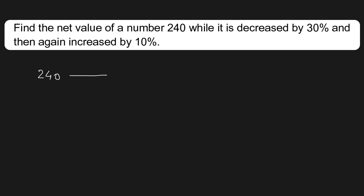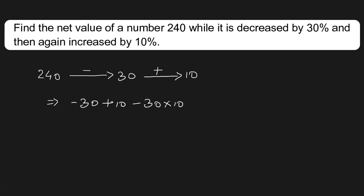Decrease will give us minus 30 percent, and then it is increased by 10 percent, so increase will give us plus 10 percent. Now, how to find the net percentage change: that is minus 30 plus 10 minus (minus 30 into 10) upon 100 percent.